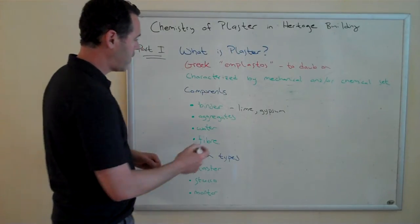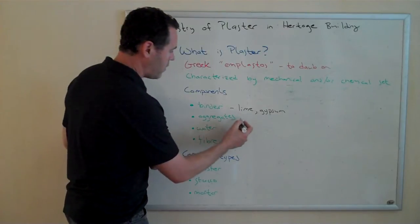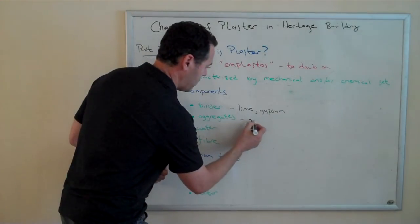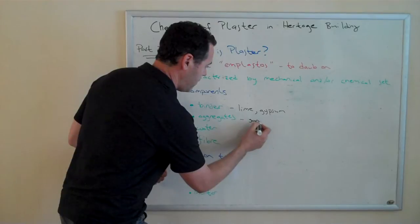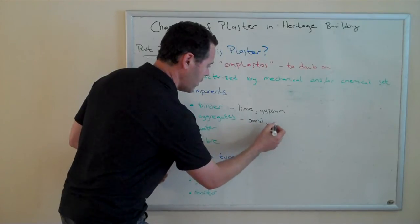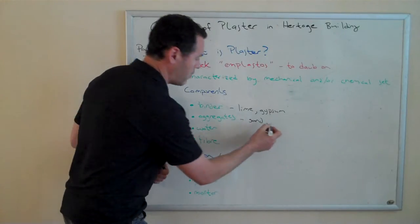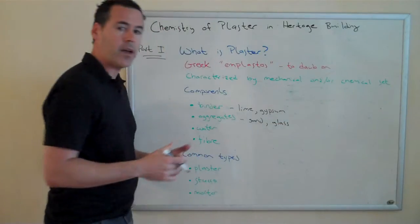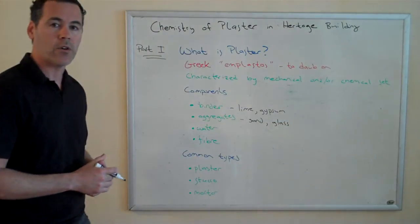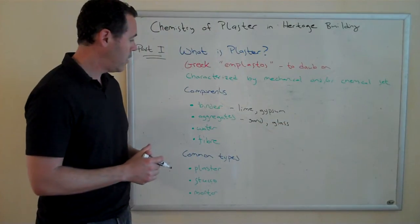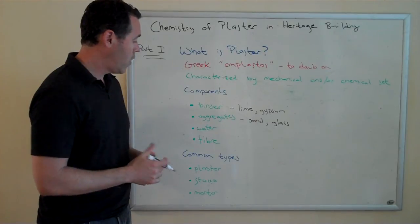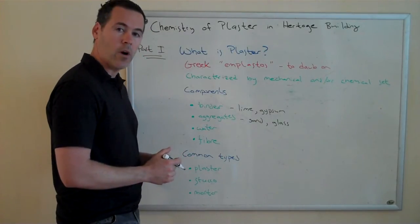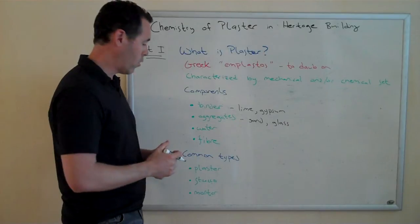Speaking of aggregates, that's another component that most all plasters contain. They can be just common sand, or components such as glass, and there's a variety of other aggregates that are used. Plasters also contain water to make them fluid and workable.